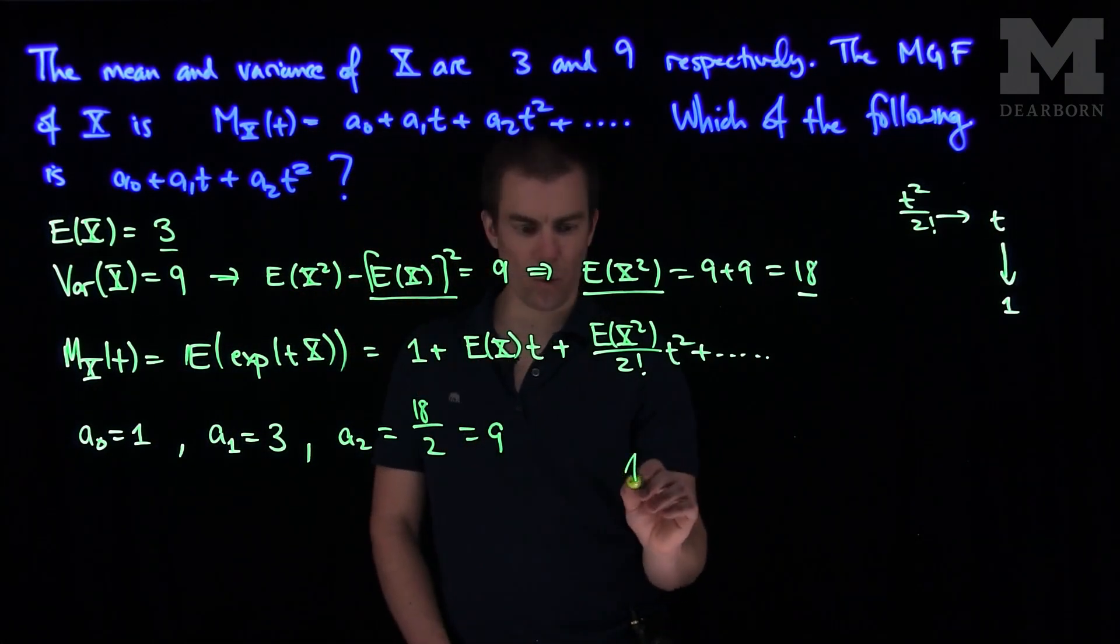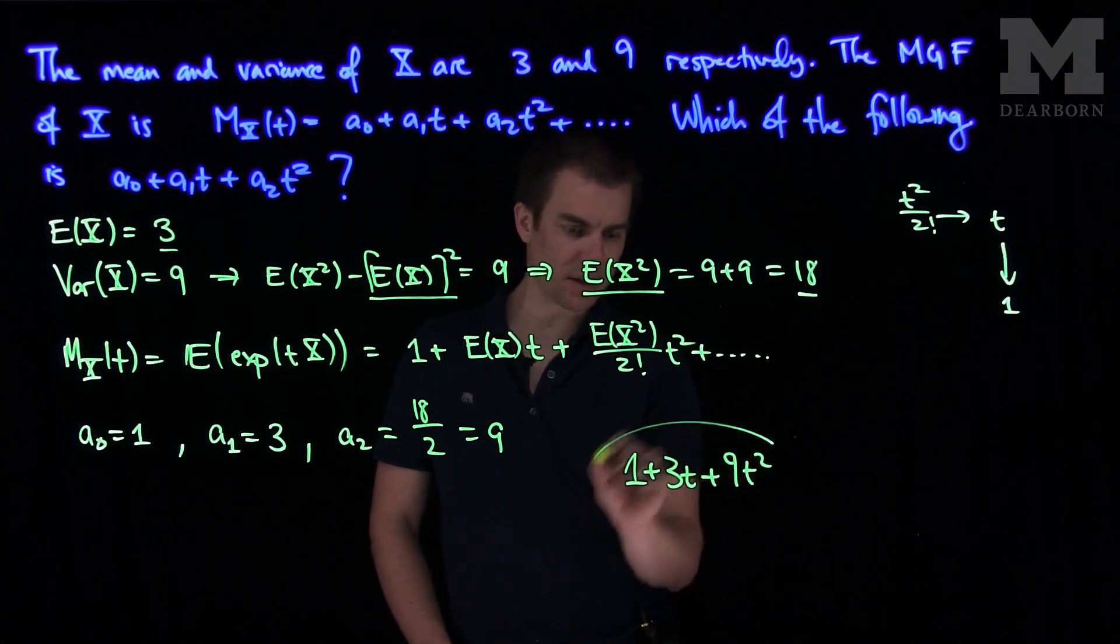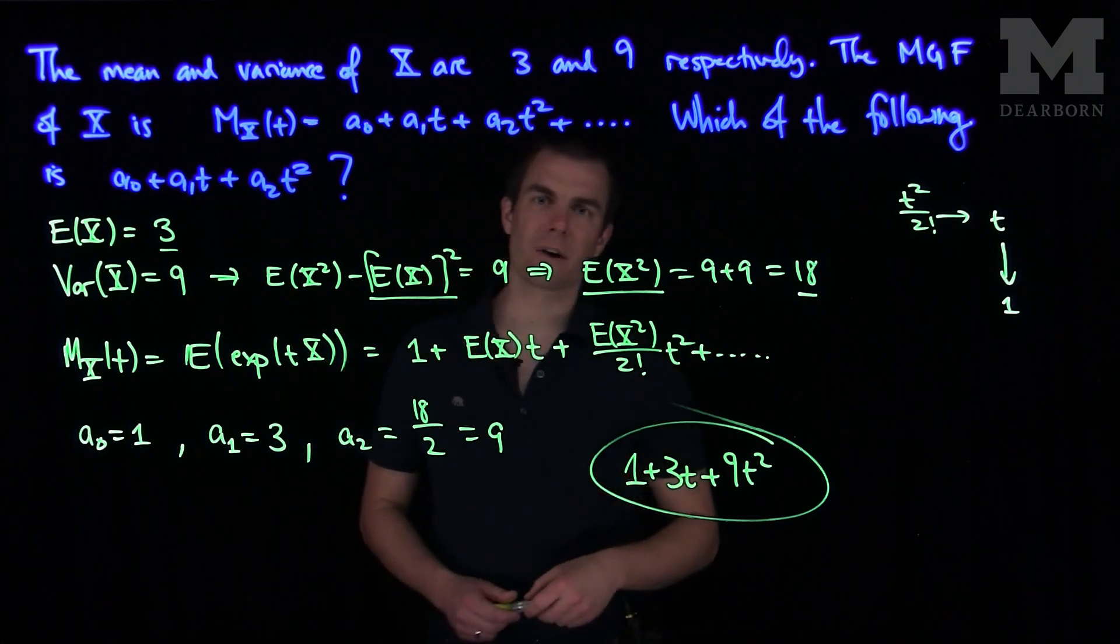So that tells us that this polynomial is going to be 1 + 3t + 9t². And that's the solution of our problem. Thank you very much.